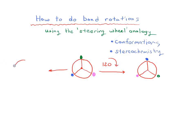Now let's say that instead of turning 120 degrees to the right, you wanted to turn 120 degrees to the left — turning into your friend's house to go to a barbecue. Your steering wheel would look like this: the green is going to be 120 degrees to the left, the blue is going to be 120 degrees to the right, and the pink is going to move 120 degrees the other way. So there are three different orientations of your steering wheel.